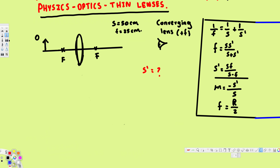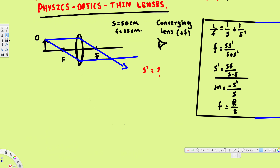Let's draw the ray diagram. The first ray goes parallel to the optical axis, hits the lens, then refracts through the focal point on the other side. The second ray goes through the focal point on the object side, hits the lens, then travels parallel to the optical axis on the other side.